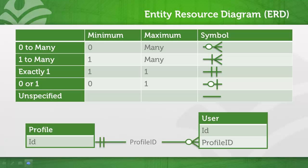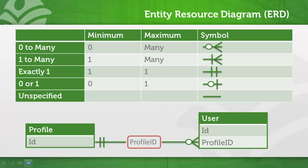For instance, you can draw several conclusions from this relationship. The symbol connecting the object indicates its relationship with the object on the other end. In this example, a profile can have zero to many associated users. The other side of the relationship tells you that a user must be assigned one and only one profile. The profile ID on the user object establishes the relationship between objects.